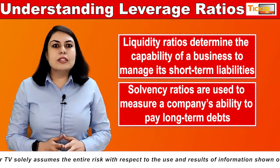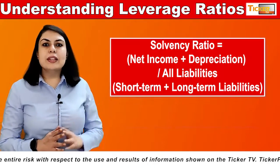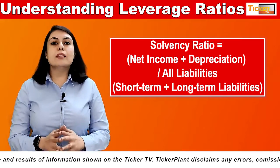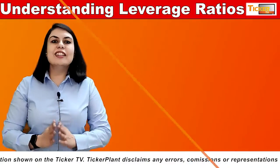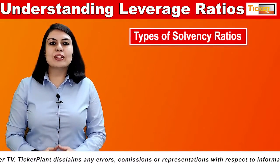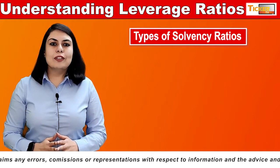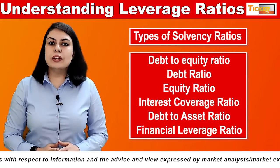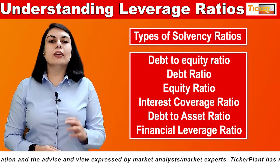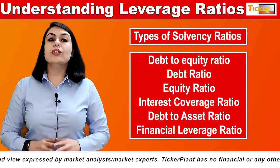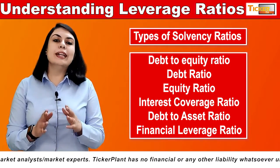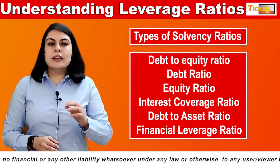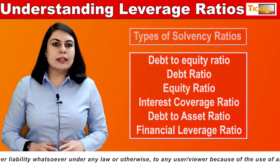The formula for calculating solvency ratios is net income plus depreciation divided by all liabilities. Now let's understand the types of solvency ratios. There are six types which we will be covering in this video: first, debt-to-equity ratio; second, debt ratio; third, equity ratio; fourth, interest coverage ratio; fifth, debt-to-asset ratio; and sixth, financial leverage ratio.